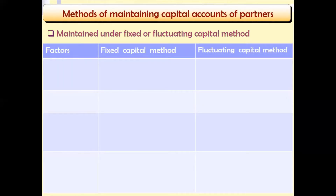To begin with, we are looking at the methods of maintaining Partners Capital Accounts in a partnership — how the Partners Capital Account is maintained under the fixed capital method and the fluctuating capital method. I have prepared the differences here, which will explain to us how the two methods are different.